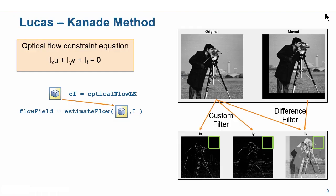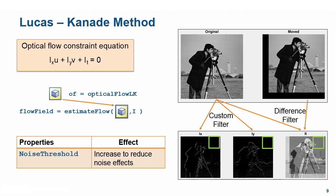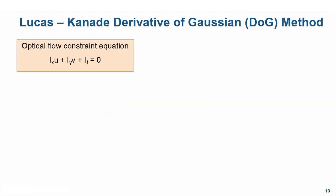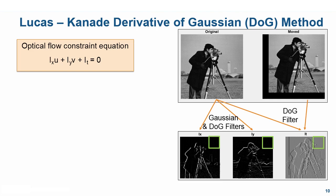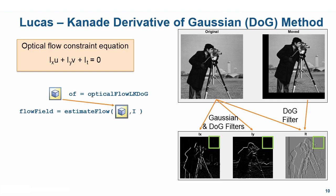The base Lucas-Kanade method uses a difference filter for the temporal gradient, which is simple and hence results in faster computations. A variation is the Lucas-Kanade derivative of Gaussian method. This is similar to Lucas-Kanade in that it solves the optical flow constraint equation in sections, but different in that it uses a Gaussian and a derivative of Gaussian filter to compute the spatial derivatives, and a derivative of Gaussian filter to compute the temporal derivative. This leads to better noise rejection compared to the base method. It can be implemented using the opticalFlowLKDoG object.